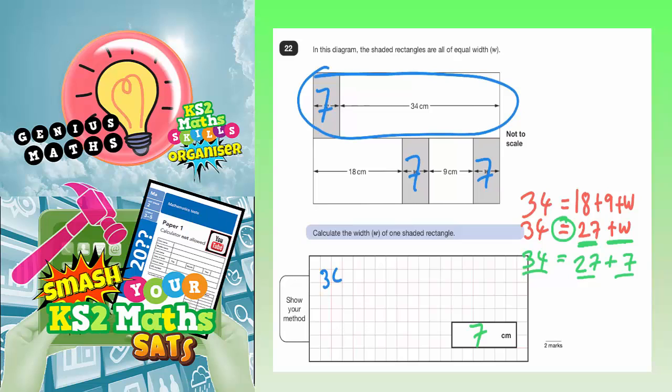So, we've got 34 plus 7. Well, if you add those together, 4 plus 7 is 11. Put the 1 in, carry the 1. 3 plus the 1 just carried is 4. So, the total length of the top set of rectangles there is 41 centimeters.